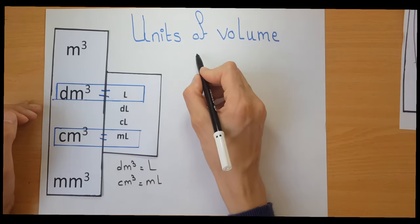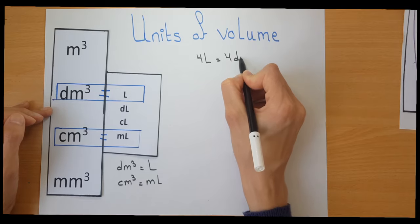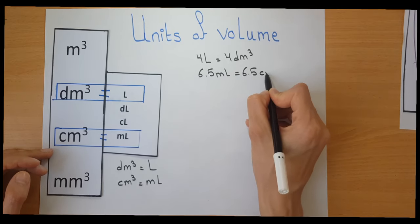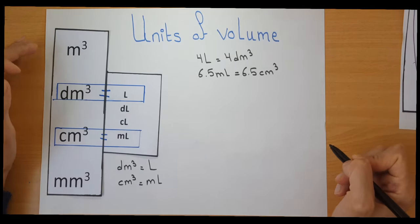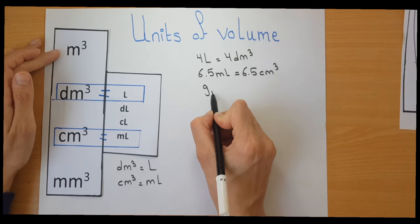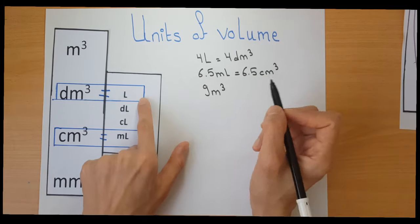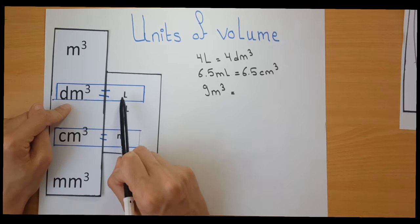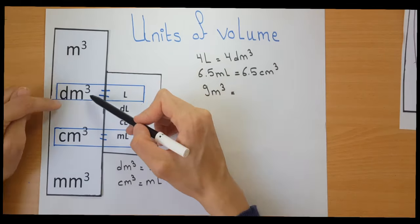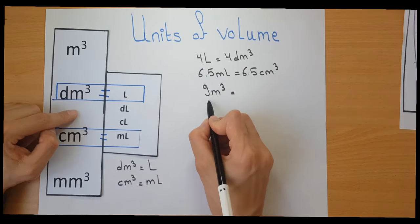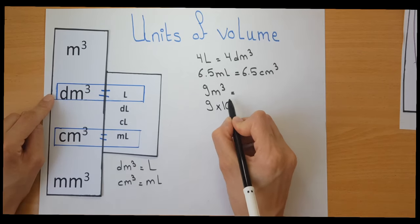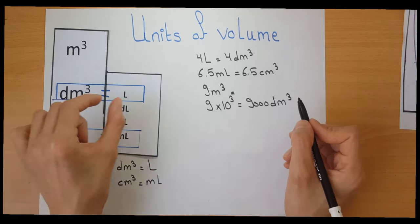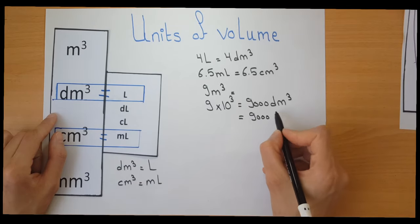For example, four liters is the same as four decimetre cube. Or if I have 6.5 millilitres, it's the same as 6.5 centimetres cube. Now, let's say I have nine metre cube and I want to convert it to litres. I first convert to decimetre cube: going down one step, I multiply by 10 to the power of 3, giving 9,000 decimetre cube. Then, since decimetre cube equals litre, that's 9,000 litres.